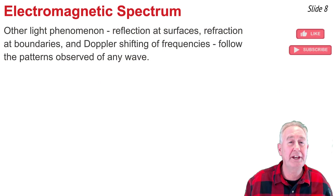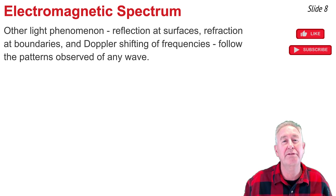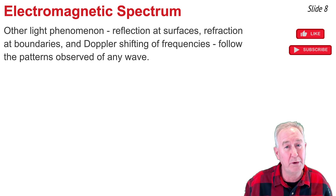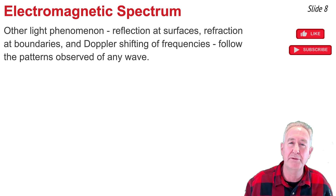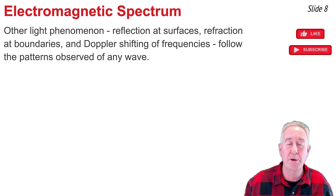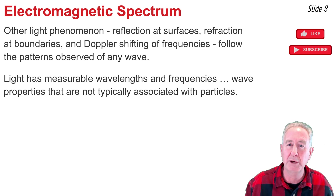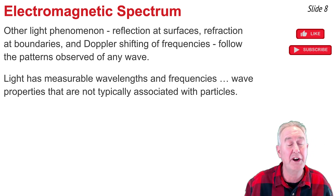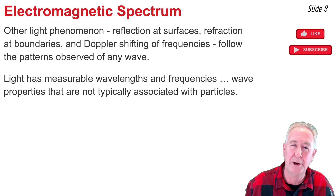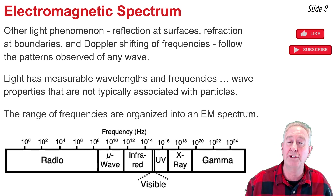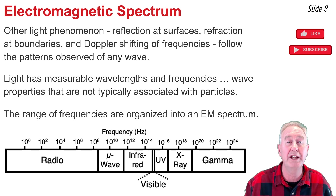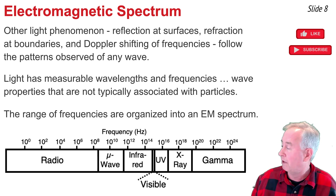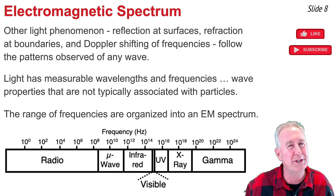In addition to interference, diffraction, and polarization, there are other behaviors of light — such as reflection at surfaces, refraction at boundaries, and the Doppler shifting of frequencies — that follow the patterns observed in other waves. Furthermore, light has measurable wavelengths and frequencies, which are properties of waves not typically associated with particles. The wide range of frequencies of electromagnetic waves are typically organized into an electromagnetic spectrum, something you've likely encountered in other science classes.